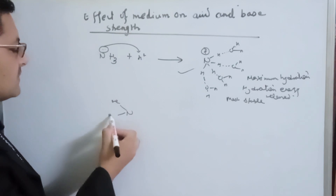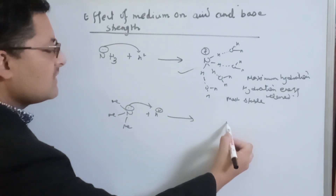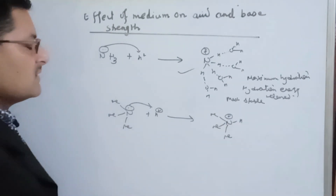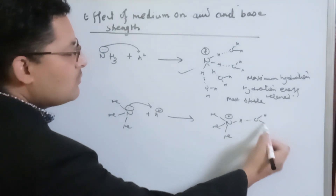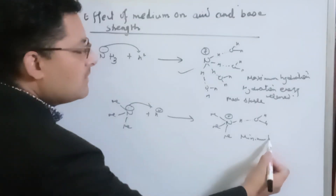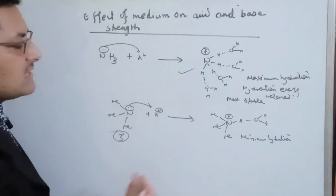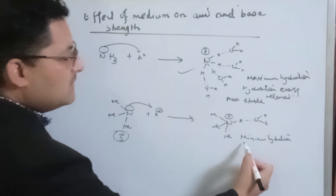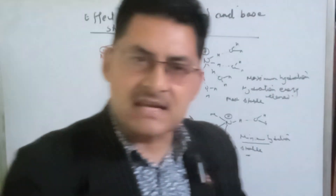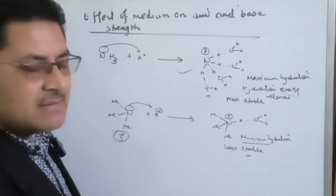The tertiary ammonium ion has three methyl groups creating a positive charge on trimethylammonium. Water molecules have difficulty accessing it, so there is minimum hydration. Because of minimum hydration, less hydration energy is released, making the tertiary ammonium ion least stable — thus tertiary amine is the lowest in aqueous basicity.